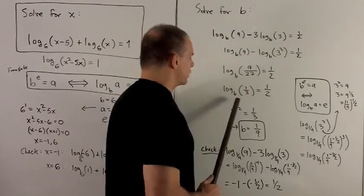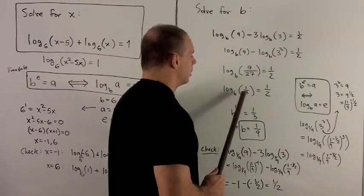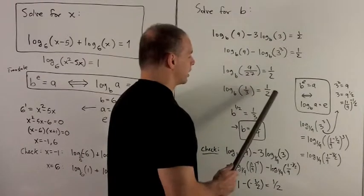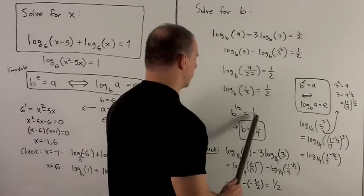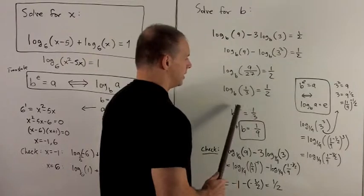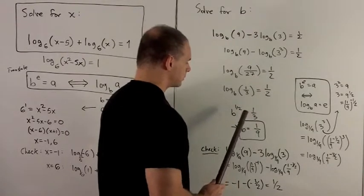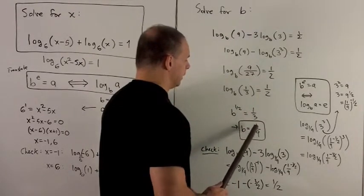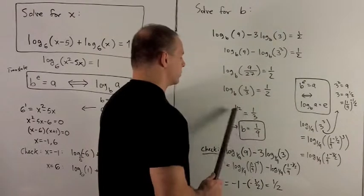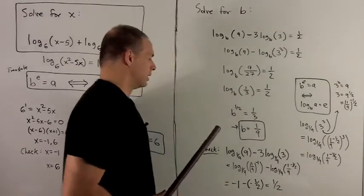So we have as our base is b, our answer is 1/3, and our exponent's 1/2. So we rewrite this like this. That's going to give me b equals 1/9. So we just square both sides to get rid of the 1/2.